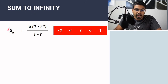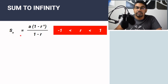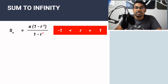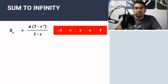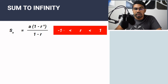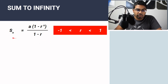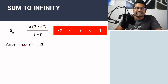Now let's look at sum to infinity using the Sn formula A(1 − R^n)/(1 − R). We can only find the sum to infinity when the value of R is between negative 1 and 1. When R is greater than 1 or less than negative 1, this formula doesn't apply. As n approaches infinity, R to the power of infinity will approach 0.